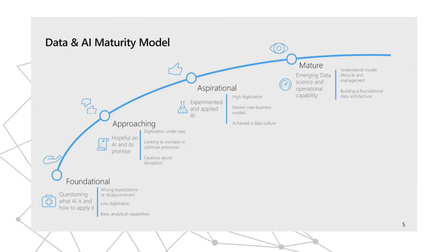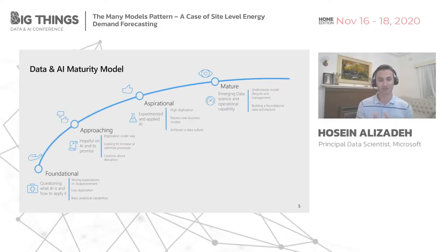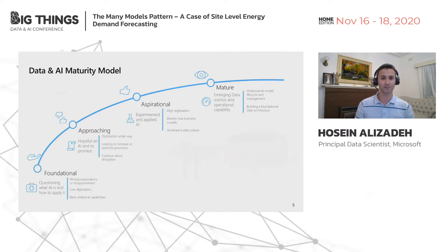Instead of training only one model or inferencing from one model, we see a pattern where there is a need for managing the full lifecycle of machine learning models at scale, including training thousands of models in parallel, forecasting with auto ML, drift detection, and productionization.